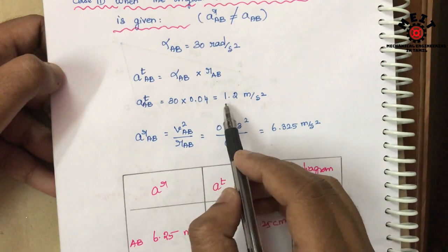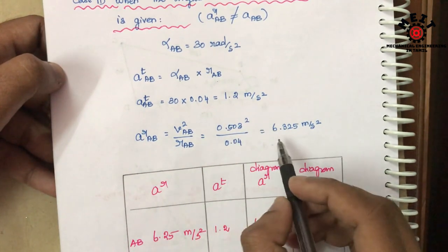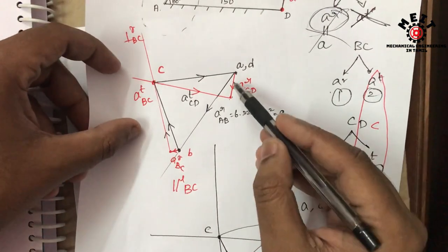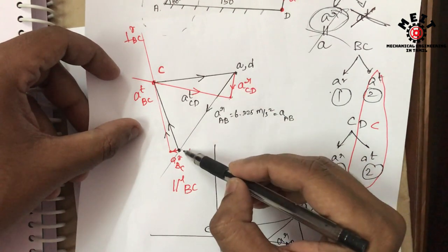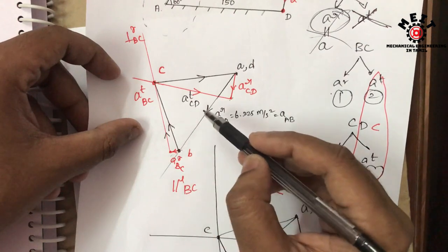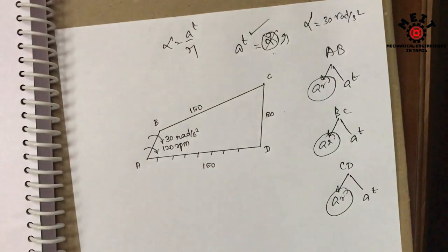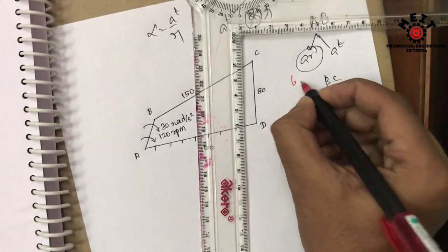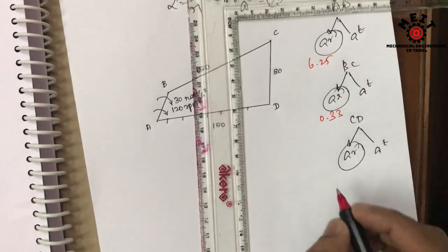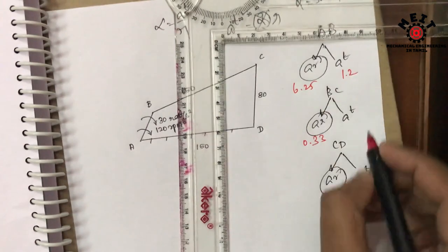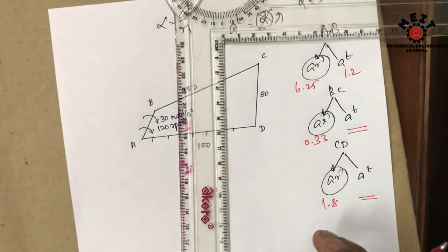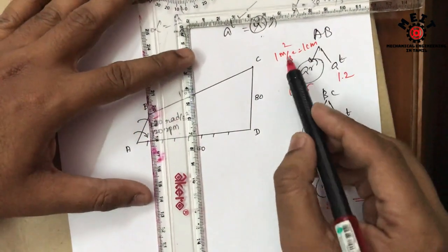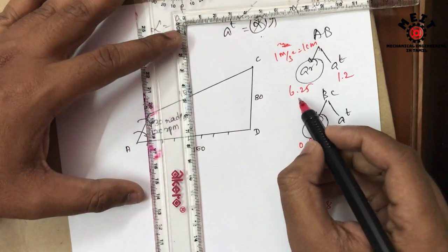That is 0.04 m, giving AT = 1.2 m/s². Then AR value is 6.32. So we draw a direct line with the AR value. We are going to drop the AR value. AR of AB is 6.25, BC is 0.33, CD is 1.8. AT value: you can do the value of 1.2. The scale: 1 m/s² = 1 cm, so 6.25 m/s² = 6.25 cm. We have to drop the diagram.